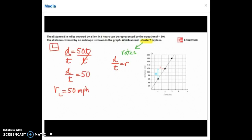Alrighty, let's talk about the antelope. The antelope's information is given to us on the graph. I notice that the x-axis is in time and the y-axis is distance. So I have that distance divided by time ratio or rate.